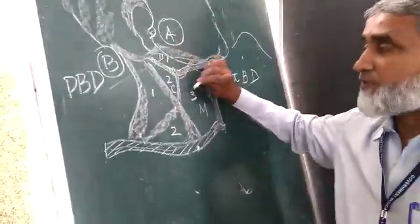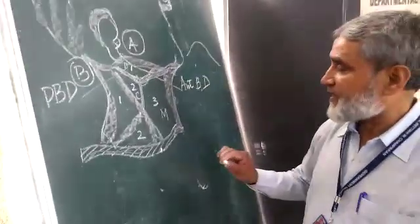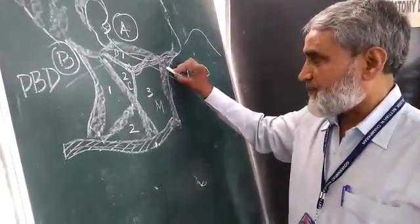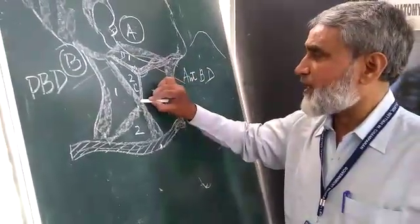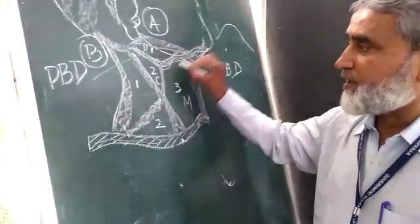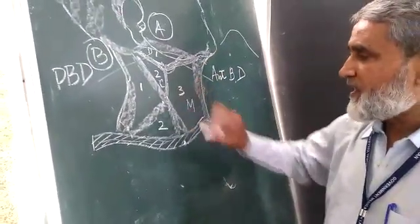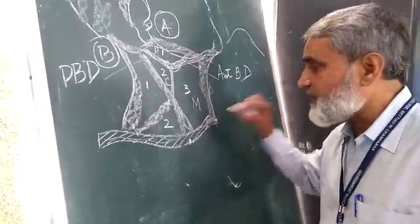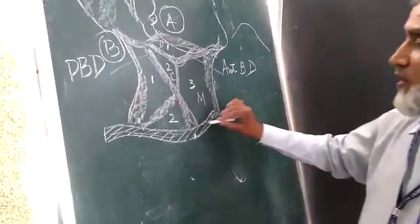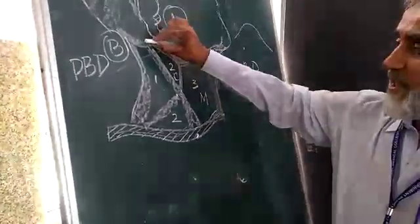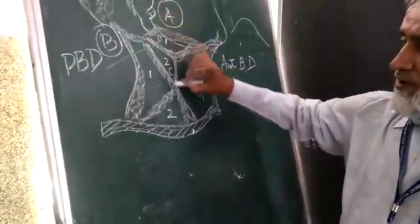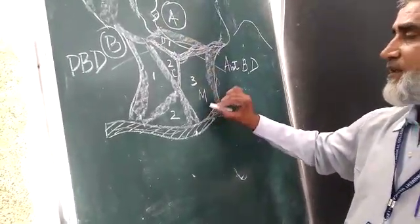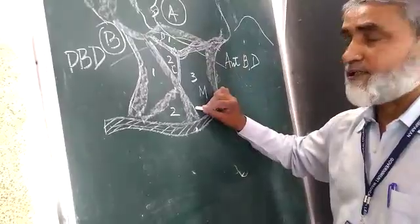And come over the third part of the anterior triangle of the neck, it is muscular. It is bounded by the both bellies of the omohyoid muscle and inferiorly by the superior border of the clavicle and laterally by the sternocleidomastoid muscle. This is muscular triangle, this is known as muscular triangle.